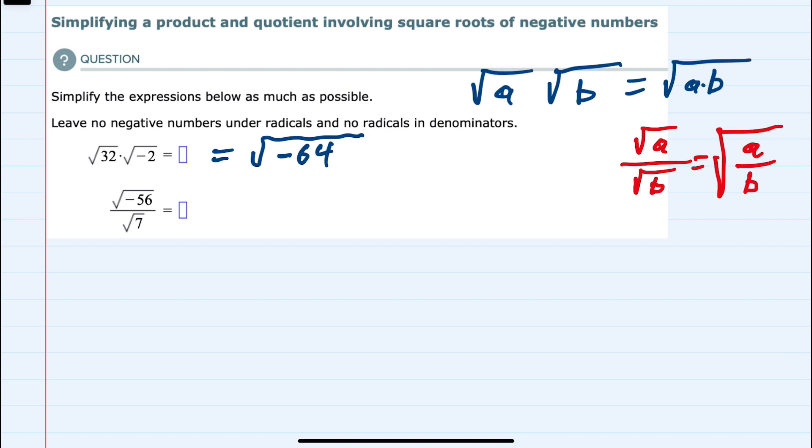And then to simplify this expression, I can rewrite it as the square root of negative 1 times 64. And this helps me visualize that since the 64 is a perfect square, we can take that out of the radical as 8.